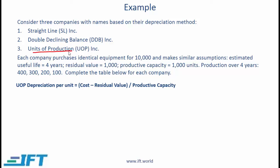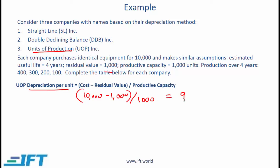For the units of production method, we calculate depreciation per unit: cost minus residual value divided by productive capacity. In our case, 10,000 minus 1,000 equals 9,000, divided by 1,000 units, gives us 9 per unit. So if 400 units are produced in year one, the total depreciation in year one is 400 times 9, which is 3,600.